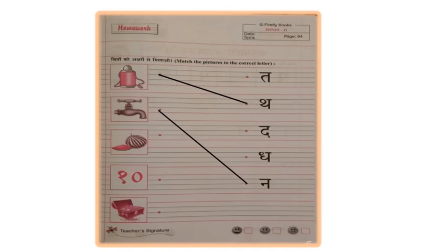With which Vyanjan? You will tell me now. I have already shown you two how to do it. Where can you see T? Look at right hand side. The first Vyanjan is T on the right hand side.